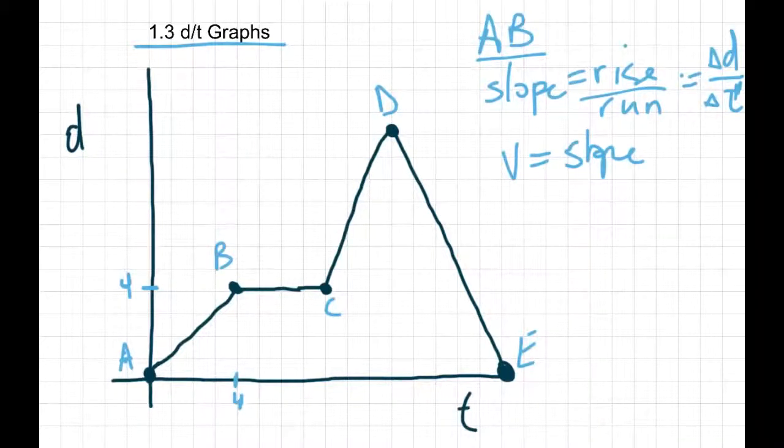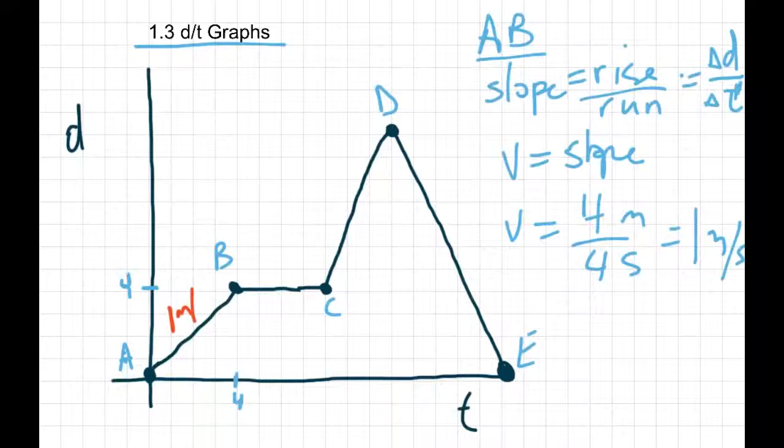So for this first section, our velocity then is change in distance is 4, change in time is 4, so we'd have 4 meters per 4 seconds, so our velocity would be 1 meters per second. So for that first section on the graph, we would have 1 meters per second would be our velocity or our speed for that section.